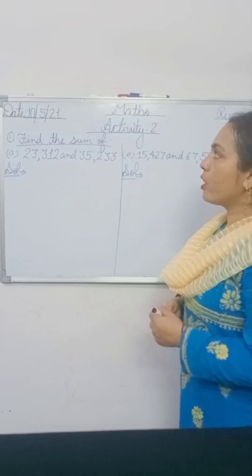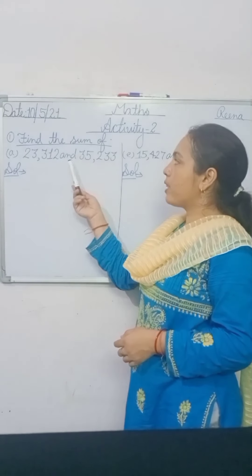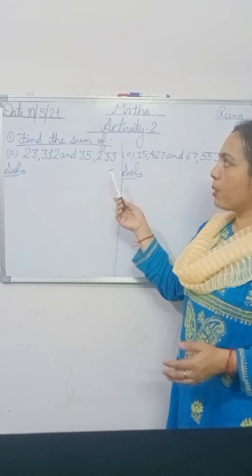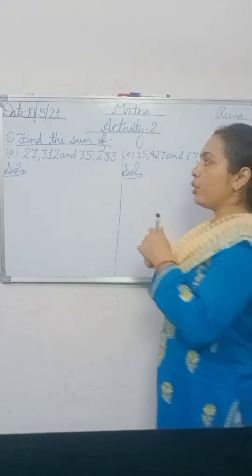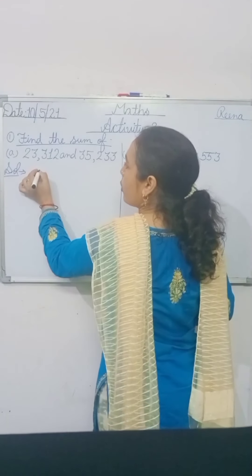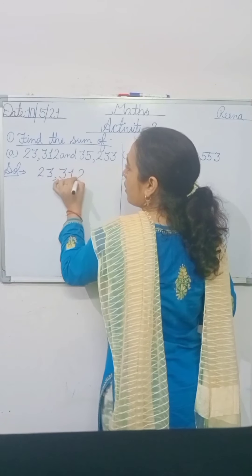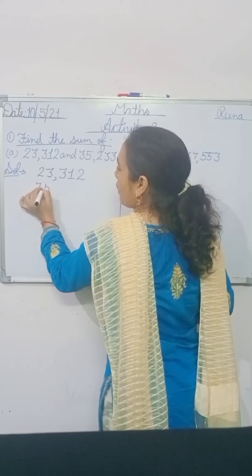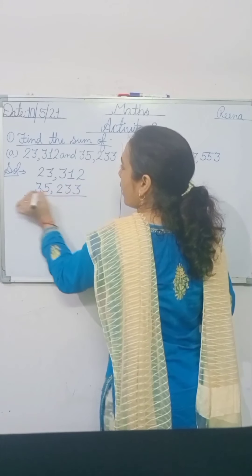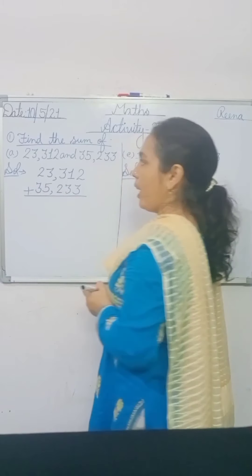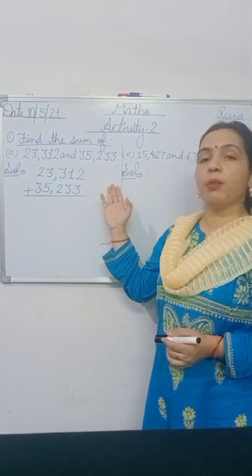Now, to find the sum: you have given 23,312 and 35,233. That means you add both numbers. For addition, write 'solved', then note your first number 23,312, then write your second number 35,233. Add numbers like this — write your numbers in vertical form, since vertical form is easy.